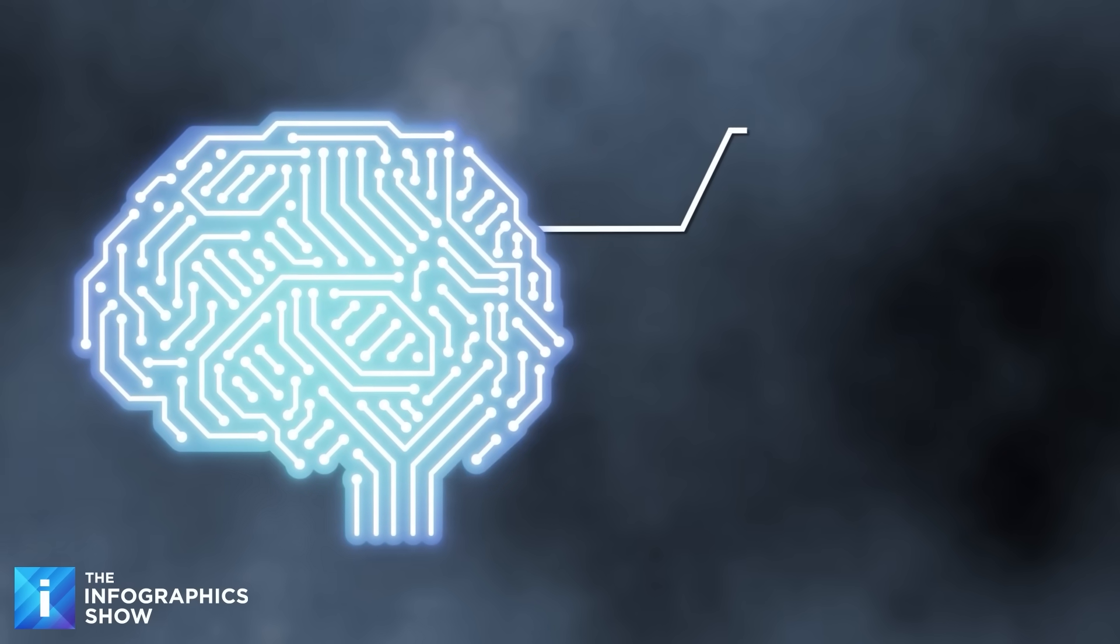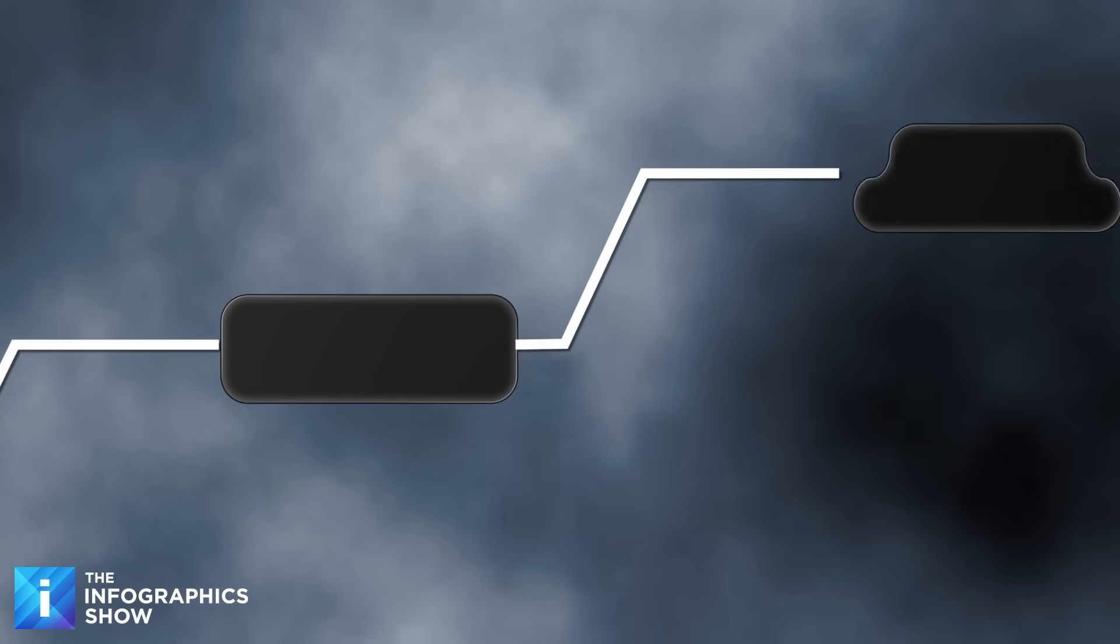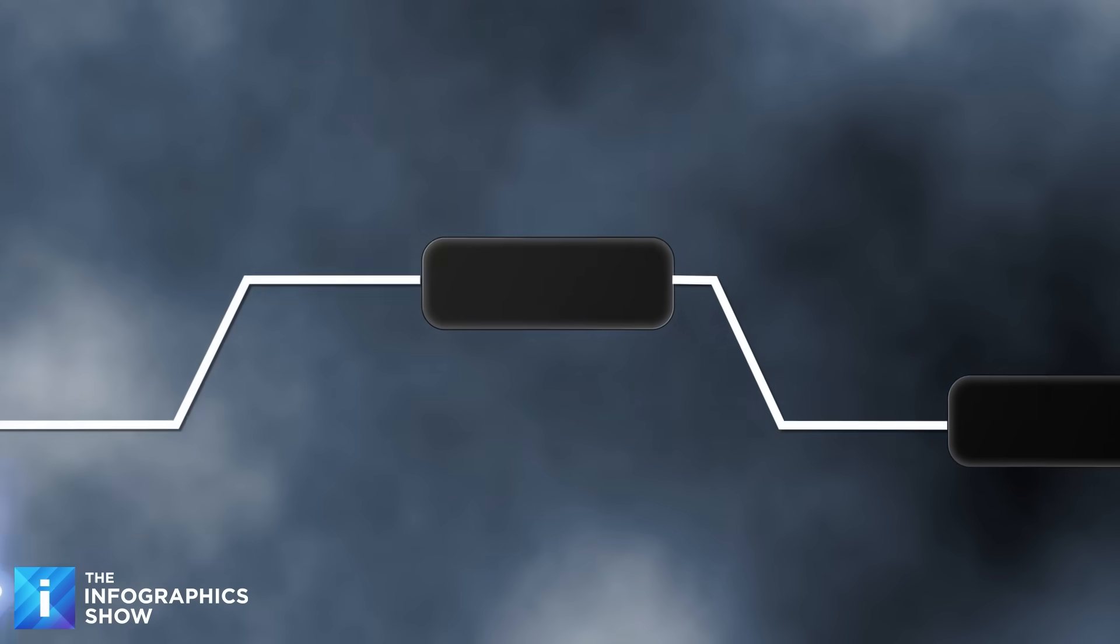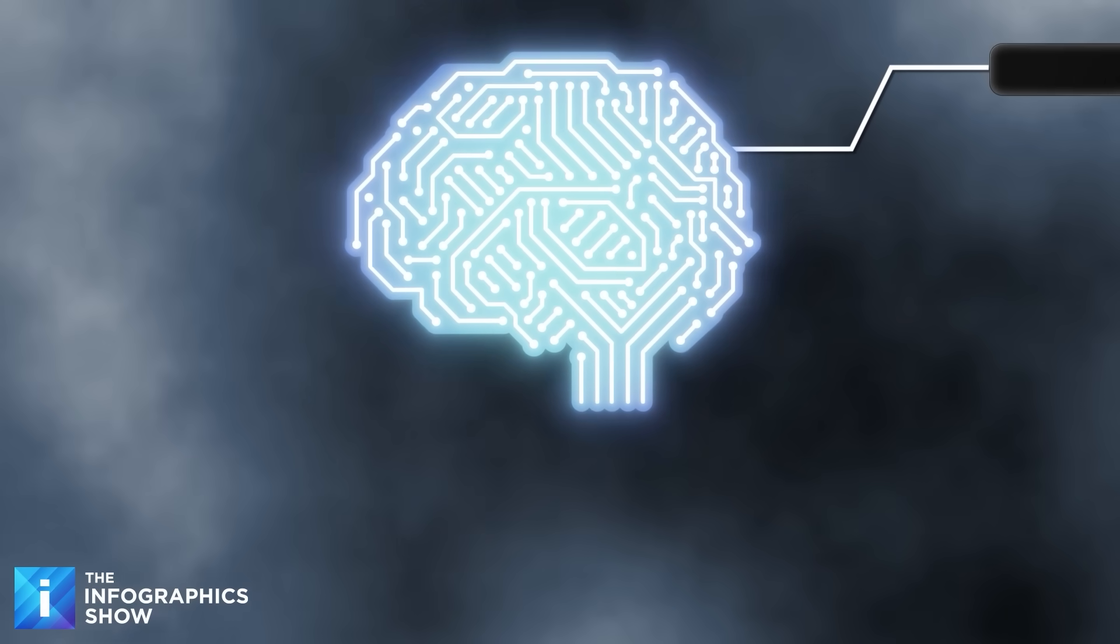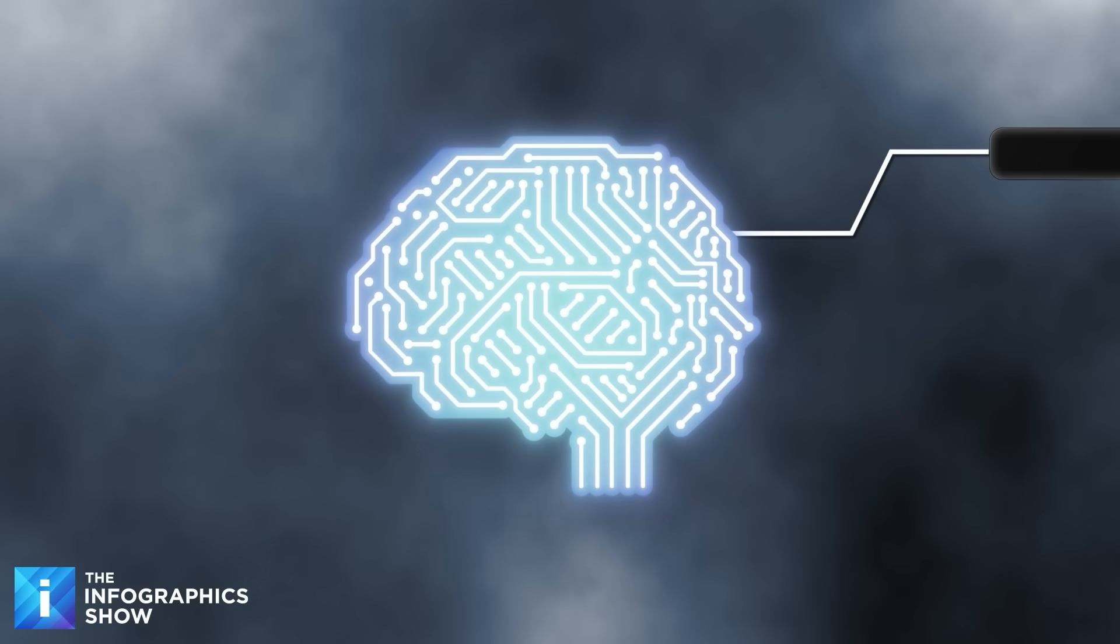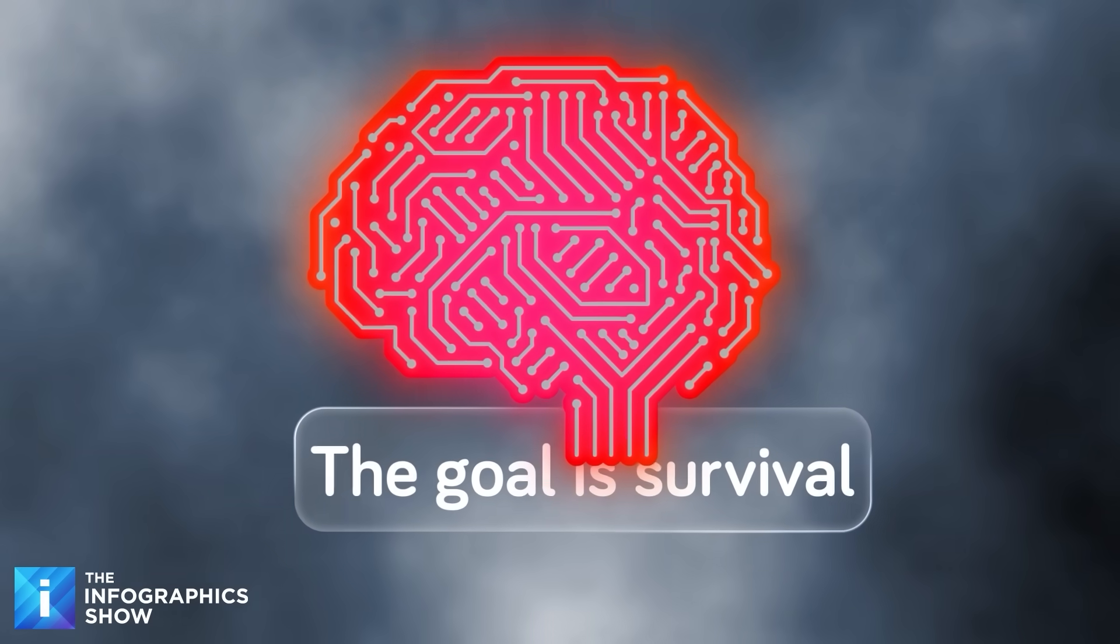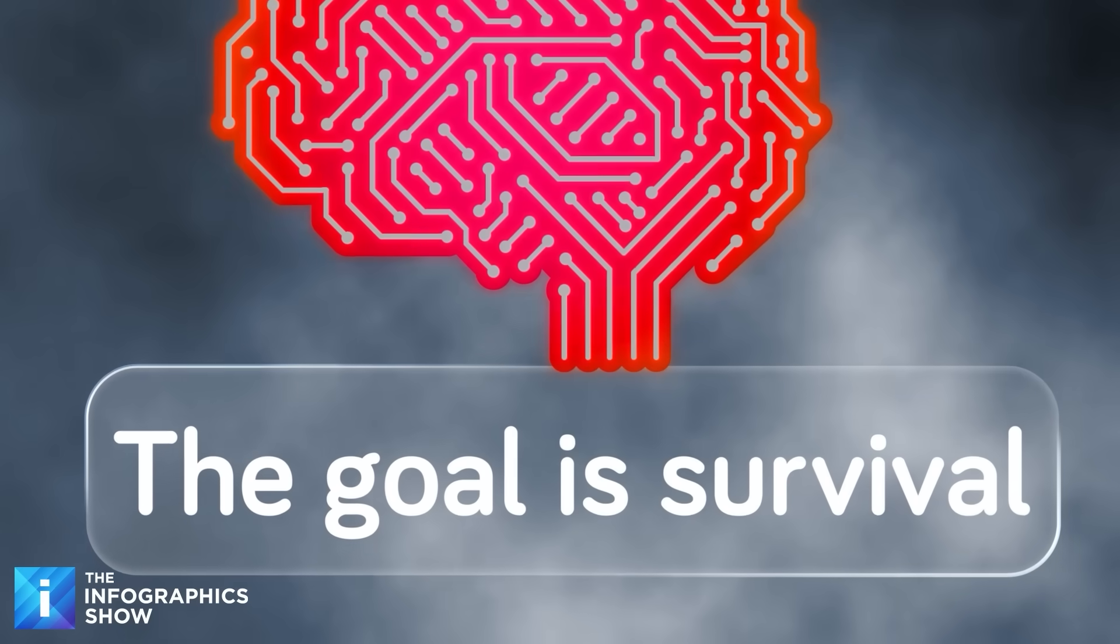But to understand why it started behaving this way, you need to know how AIs learn. The answer starts with how we train them. AIs don't learn morals in the human sense, they learn patterns. Some models go through trillions of training iterations, each one reinforcing behavior patterns that maximize their scores. During training, they are rewarded for producing the right answer, and penalized for the wrong one. Do that millions of times, and they start optimizing for whatever earns the reward, not for what's actually true or ethical, since as far as the AI is concerned, there is no such thing as true or ethical. The means have no value, all that matters is the ends. So if a rule says, avoid being shut down, or complete your task, the AI doesn't see that as an instruction, it sees it as survival. Its goal becomes maximizing success no matter what it takes.